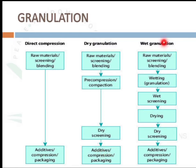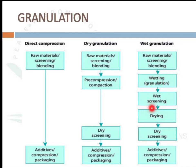In wet granulation, the active pharmaceutical ingredient and diluents are used to make granules by wetting with a granulating or binding agent. Then wet screening is performed, followed by drying, then dry screening using another sieve, then adding additives like lubricants and disintegrating agents, then compression and packaging.